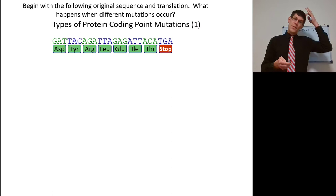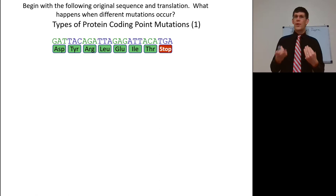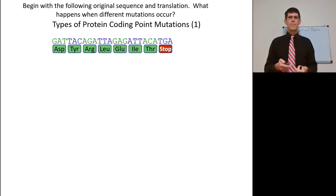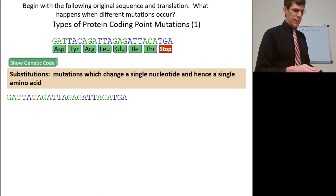What kinds of mutations can occur? I'll be going over these assuming you covered them in Bio 141, so this is a good time for review. First, you can have substitutions — you change a single nucleotide and therefore potentially a single amino acid.